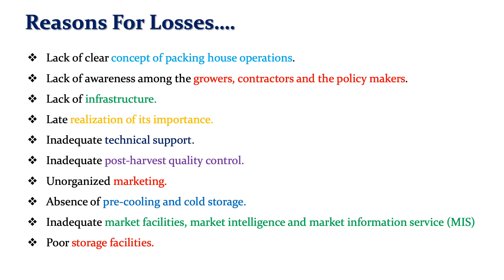What are the reasons for these different losses? Lack of a clear concept of pack house operations contributes to losses, because pack house operations carry out packaging, pre-cooling, and cold storage of food material up to final dispatch. The second reason is lack of awareness among growers, contractors, and policy makers, which leads to post-harvest losses. Then there is lack of infrastructure — production in India is high but infrastructure facilities are inadequate, with no good ventilation, and are not sufficient for storage of grains, fruits, and vegetables during excess production seasons.